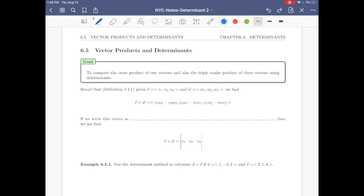Hello everyone, welcome back. Today I'm going to talk about section 6.5, which is about vector products and determinants. The goal is to compute the cross product of two vectors and also the triple scalar product of three vectors, but using determinants.